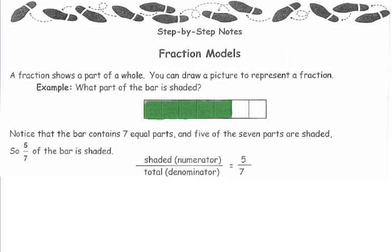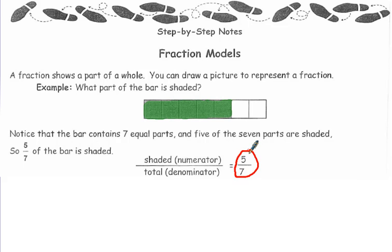Fraction models show part of a whole, so you can draw a picture. What part of the bar is shaded? Well, 5 out of 7 parts are shaded, so 5 are shaded out of a total of 7. We would say 5 sevenths is shaded.